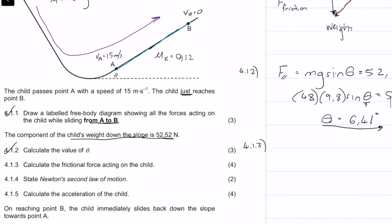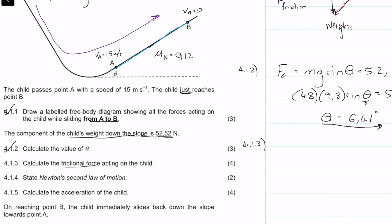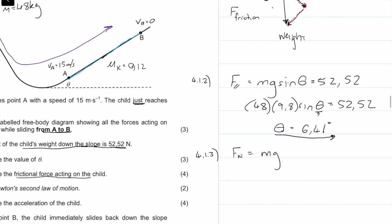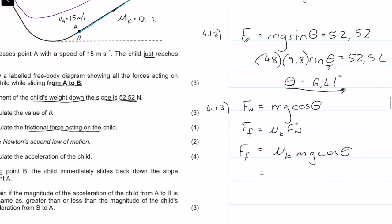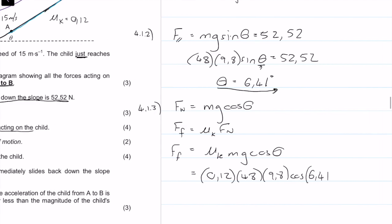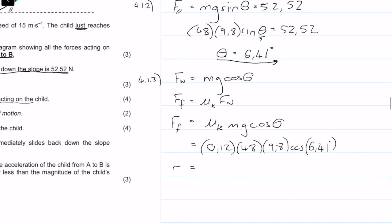Question 4.1.3: calculate the friction force acting on the child. The normal force equals mg cos theta, and friction force equals mu_k times the normal force. So F_friction = mu_k × mg × cos theta = 0.12 × 48 × 9.8 × cos(6.41°) = 56.10 N. Four marks for that.